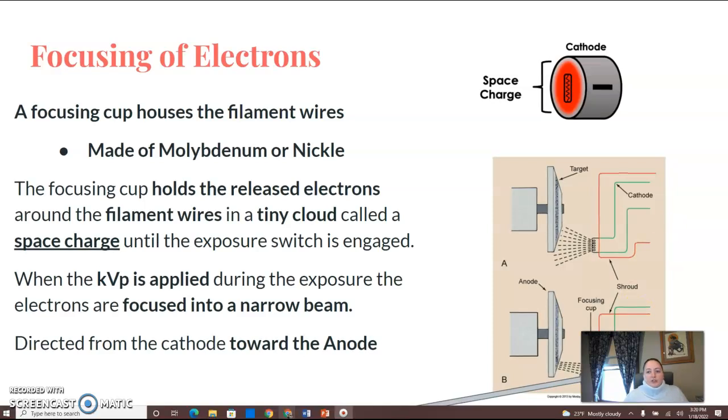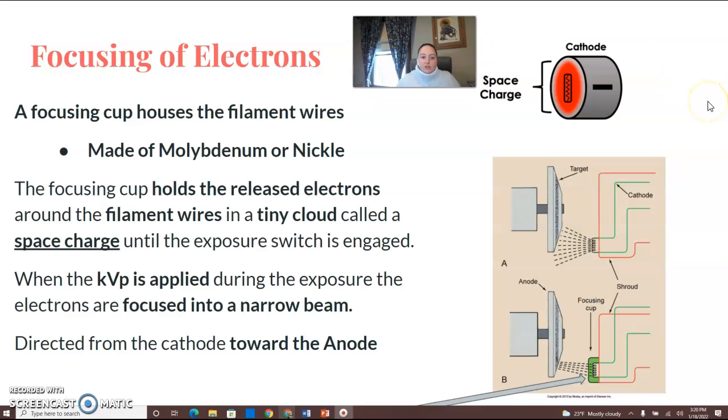You need a way to focus those electrons being accelerated across the tube. That's where the focusing cup comes into play. It houses the filament wires on the cathode end and is made of molybdenum or nickel. It holds the released electrons around the filament wires in a tiny cloud called the space charge until the exposure switch is engaged.